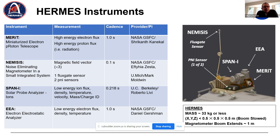Level two data will be phase space densities. Level two data for the magnetometer will be individual measurements of magnetic field calibrated from the three sensors. Level three data for the magnetometer will have the interference fields removed, and level three data from the spectrometers will be things like densities, temperatures, and bulk velocities reduced from the phase space densities.